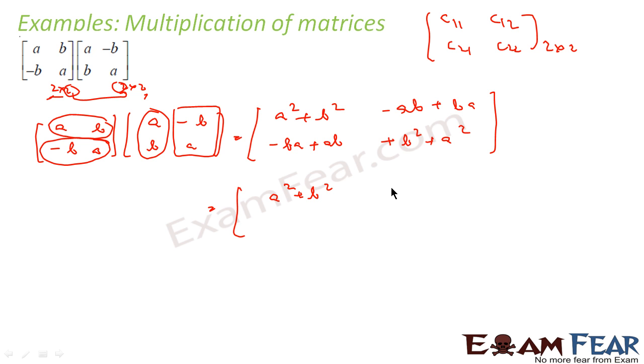So what you get finally is a squared plus b squared, zero, zero, a squared plus b squared, and this is a 2 cross 2 matrix.